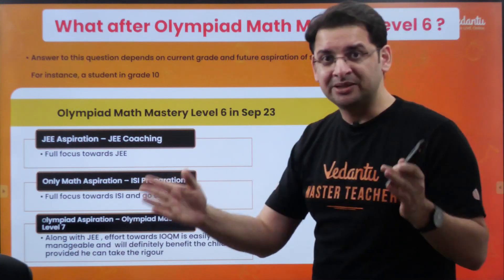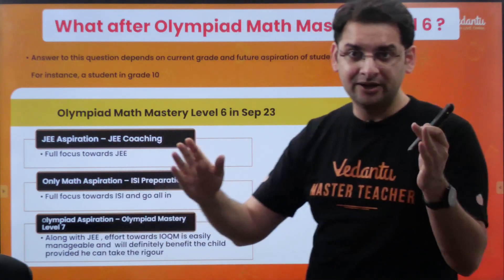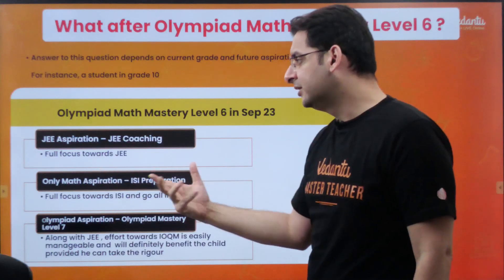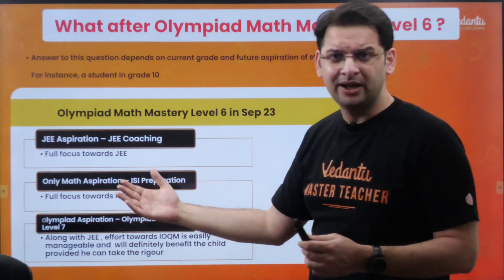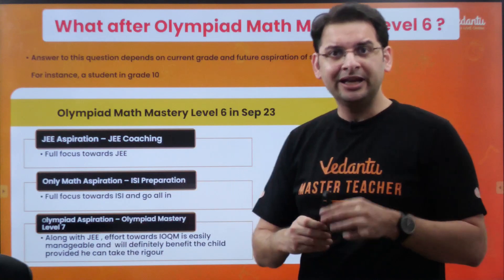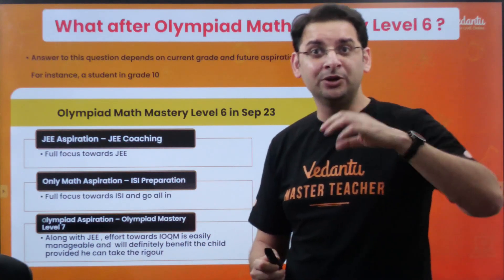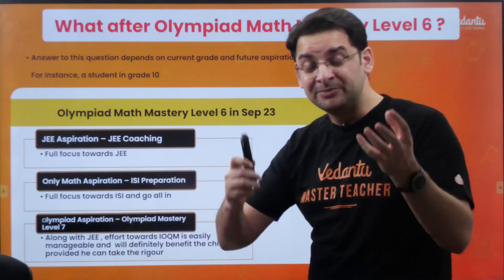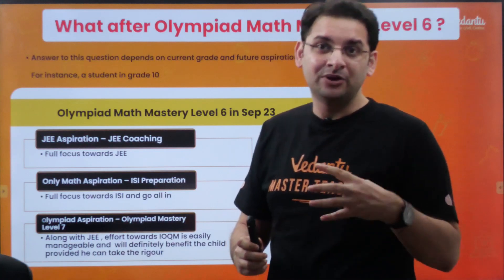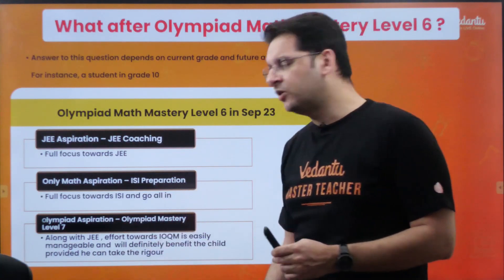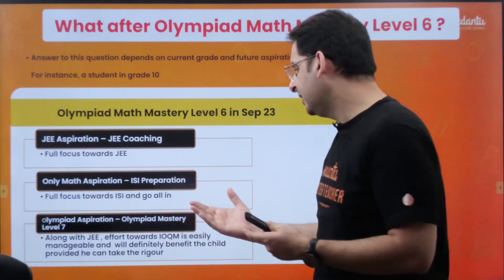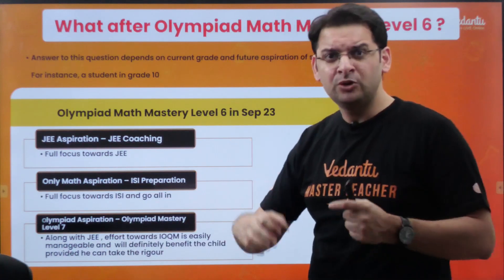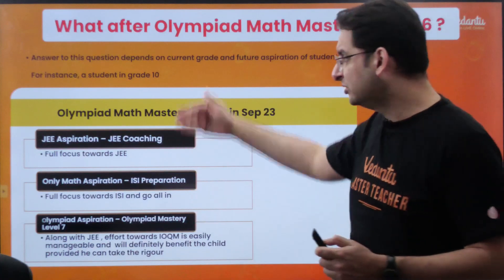However, if his aspiration is towards mathematics as a career, he can always go for the master course which covers JEE plus ISI plus IOQM. And if he feels Level 6 preparation has helped him and wants to continue, Level 7 is definitely going to help further. If he can find the time alongside his JEE preparation, he can opt for Olympiad Mastery Level 7 in 11th — many students do that and it benefits their JEE preparation immensely.